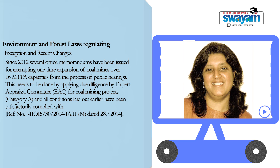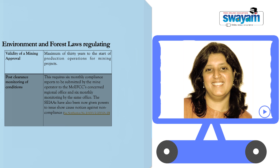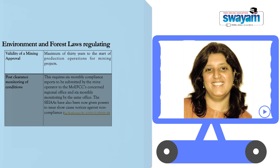Importantly, the Environment Impact Assessment Notification clearly lays down the validity of a mining approval, which is a maximum of 30 years to start production operations in a mine. There are also clearly stipulated clauses for post-clearance monitoring: all mining operations must submit six-month compliance reports with the Ministry of Environment or its regional office closest to them, and these regional offices carry out monitoring every six months. Recently, powers have also been given to the State Impact Assessment Authority to monitor compliance of conditions for even Category A mining. This completes the section on Environment Impact Assessments.